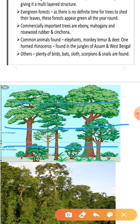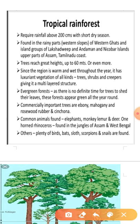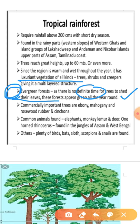In this way there is a multi-layered structure in the evergreen forest. The question arises: why are they called evergreen forest? Because there is no definite time for trees to shed their leaves. Due to the large number of varieties, they do not have a definite time to shed their leaves. That is why these forests appear green all the year around.